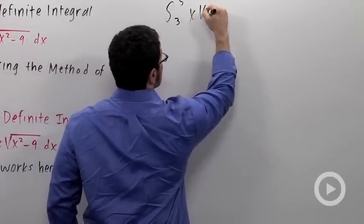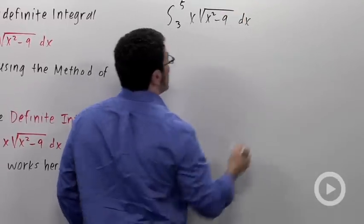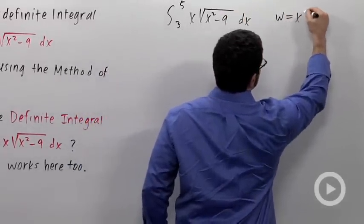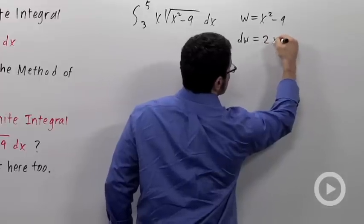The integral from 3 to 5, x times the square root of x squared minus 9. So we'll substitute for the x squared minus 9. w equals x squared minus 9. And dw will equal 2x dx.